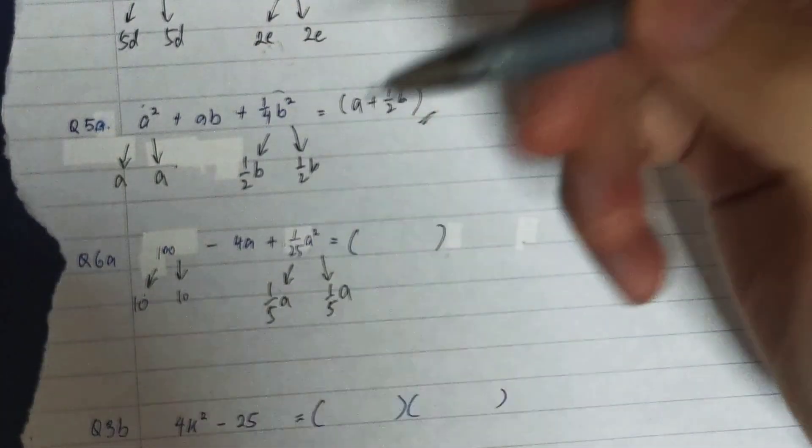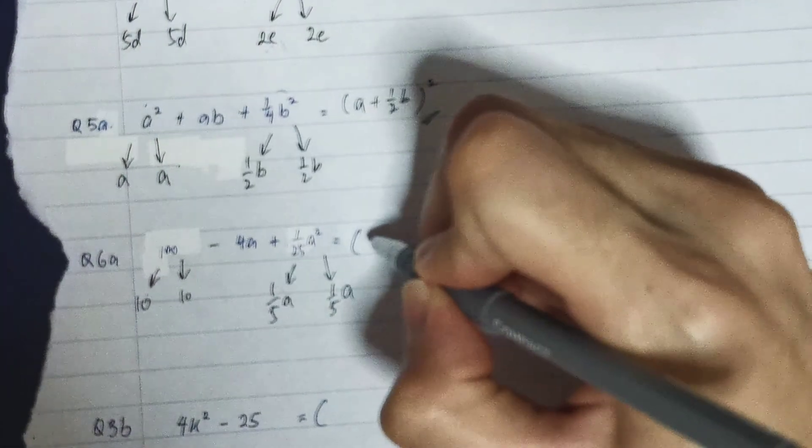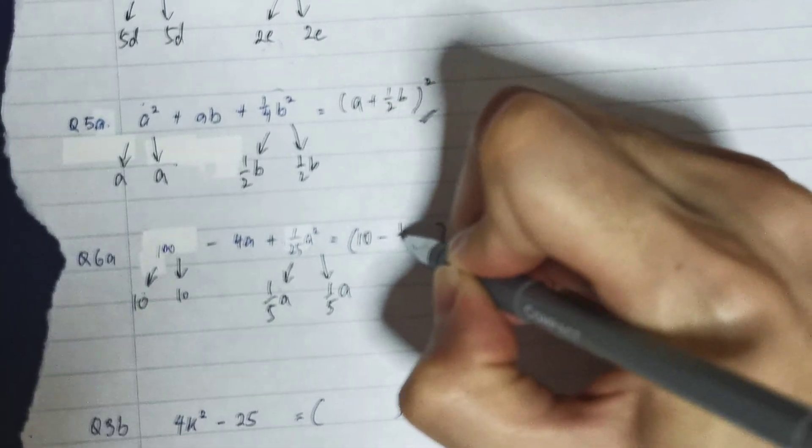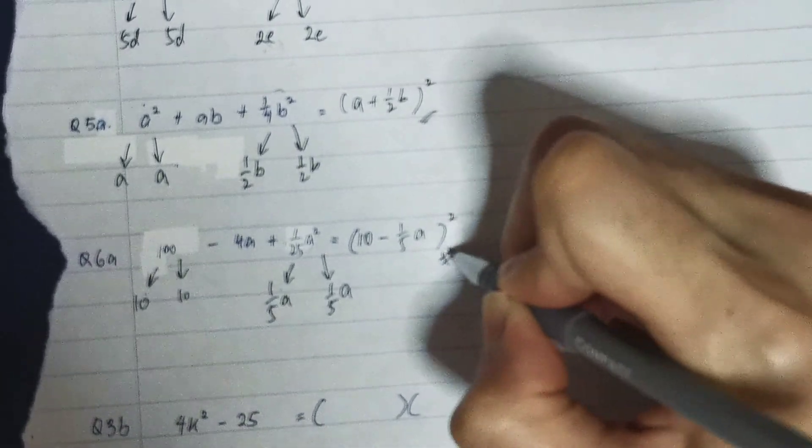So it's alright, it's correct. So this means my (a - b) will be (10 - 1/(5a))². So this is my factorized answer.